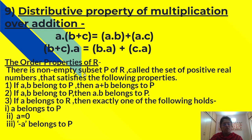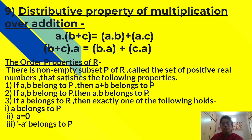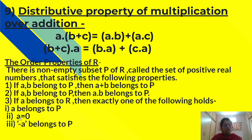There is a non-empty subset P of R, which is called the set of positive real numbers, that satisfies the following properties. First: if a, b belongs to P, then a into b also belongs to P. Second: if a belongs to R, then exactly one of the following holds — either a belongs to P, or a equals 0, or minus a belongs to P.